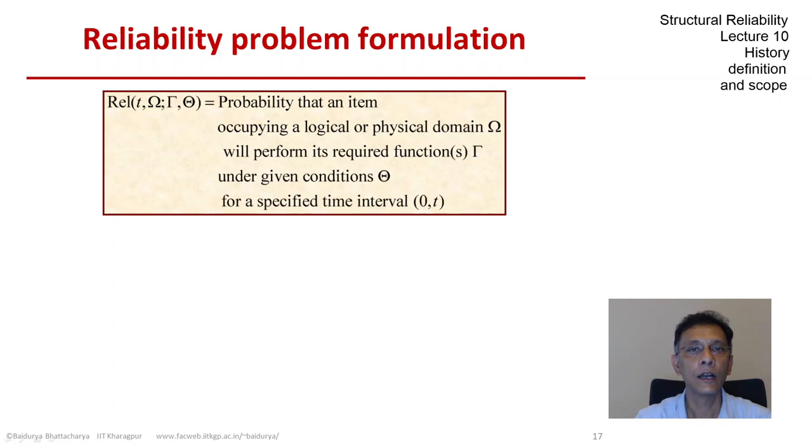This was our definition that we discussed yesterday: reliability is the probability that your item of interest would do its job over the service life. The points to note are the domain omega that your item occupies, that helps define it, the performance objectives, the functions that it must satisfy gamma, and the service conditions theta under which it must operate.